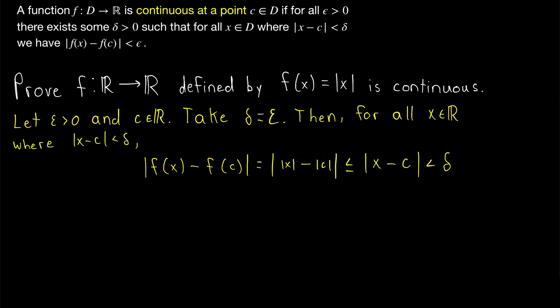Delta has to be greater than zero, and of course epsilon is greater than zero. So delta equals epsilon is a perfectly valid value.